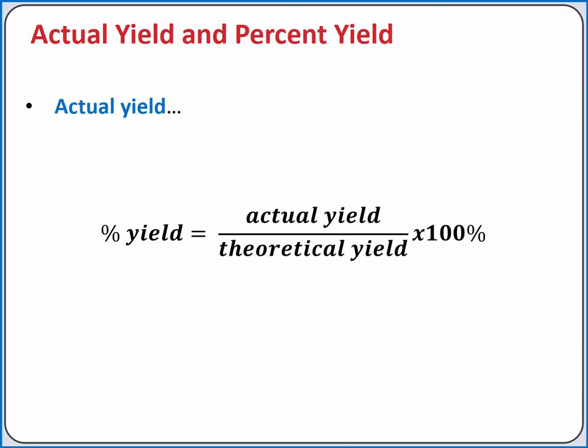When you actually run an experiment, you may get out a different amount of product than you calculated you should be able to produce. The amount of product you actually produce when you perform an experiment is called the actual yield. The percent yield is the actual yield divided by the theoretical yield times 100%.